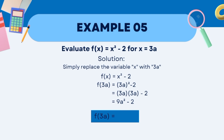In our last example, we have f(x) = x² − 2 for x = 3a. First, substitute the given value 3a into the given variable. So, f(3a) = (3a)² − 2. Now solve. 3a times 3a equals 9a² minus 2.